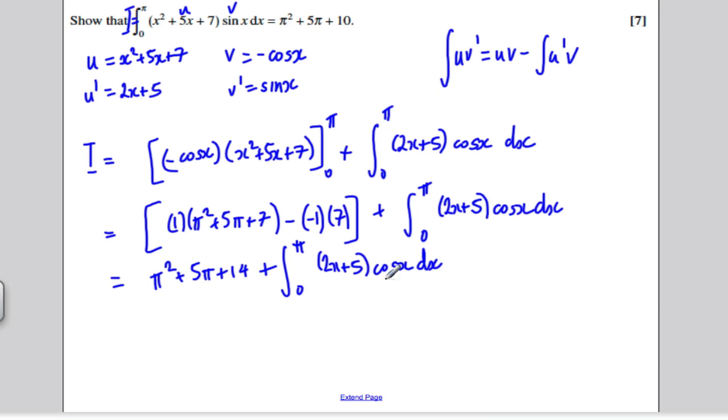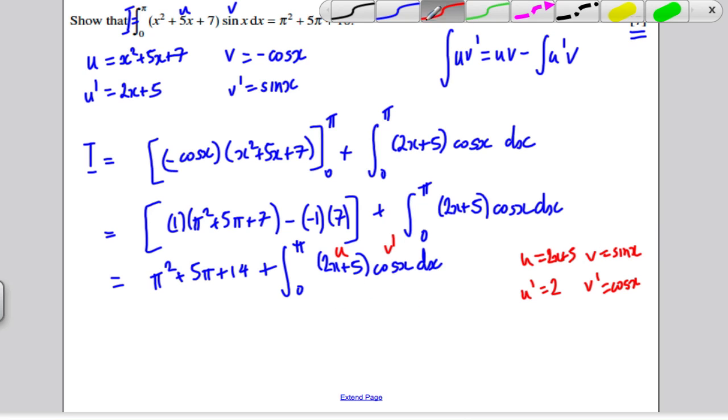Now looking at this, this isn't easy to integrate directly. It looks like a product of two different functions, so I need to use another integration by parts. Hence why this is a 7 mark question, quite hard. Let's define u as 2x plus 5, so u' is simply 2. If v' is cos x, then v is sine x.